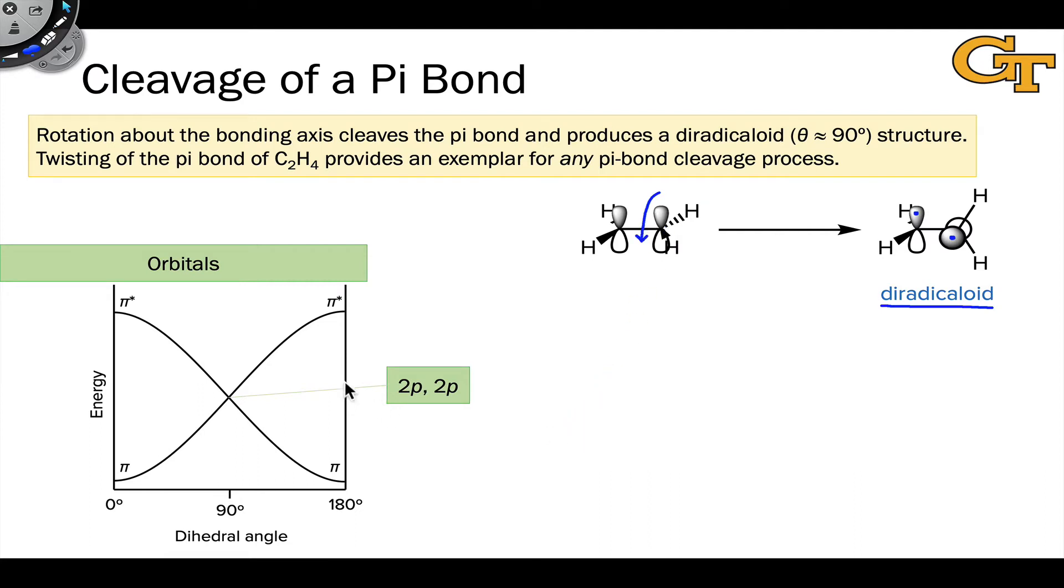We can see that if we look at the dependence of the orbital energies on the dihedral angle between the two CH bonds at either carbon in ethylene. This dihedral angle refers to the angle between this CH bond pointed directly out towards us and this CH bond pointed away from us. That starts out at zero degrees, and we're in a classic pi bonding situation with pi and pi star orbitals that are separated quite a bit in energy.